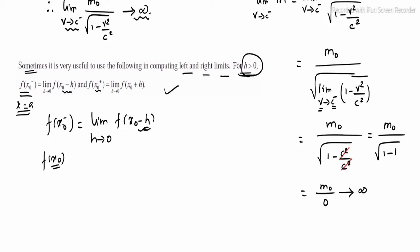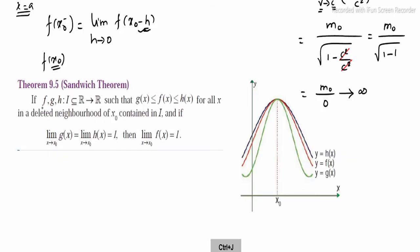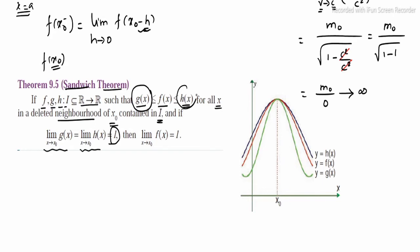So in this case, we will use the sandwich theorem. The sandwich theorem states: if f, g, h are functions on an interval I such that g(x) ≤ f(x) ≤ h(x) for all x in a deleted neighborhood of x0 contained in I, and if limit as x tends to x0 of g(x) equals limit as x tends to x0 of h(x) equals L, then the limit of f(x) also equals L.